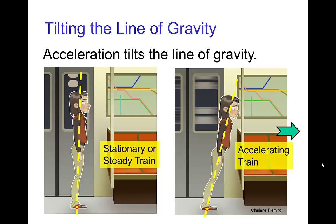On the other hand, if the train accelerates forward, then to stay in balance the character needs to lean forward. The acceleration of the train combines with the acceleration of gravity, causing the line of gravity to tilt in the direction of the accelerating train. So the character, in order to stay in balance with this tilted line of gravity, needs to lean forward.